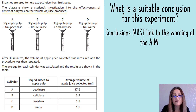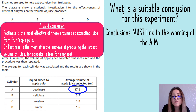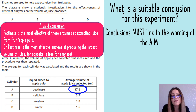You need to make sure your conclusion matches the results as well. Looking at the results, pectinase is producing a far larger volume of apple juice than the other enzymes. So a really good conclusion would be that pectinase is the most effective enzyme at producing the largest volume of juice. You might instead note that amylase produces very little juice and talk about it being the least effective - that's fine too, as long as your wording matches the aim and the results. It takes a lot of practice, but if you identify the aim at the start, it makes everything so much easier.